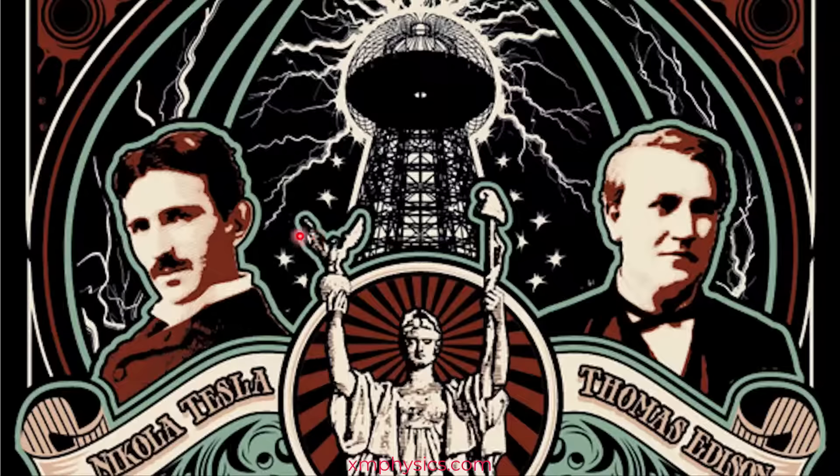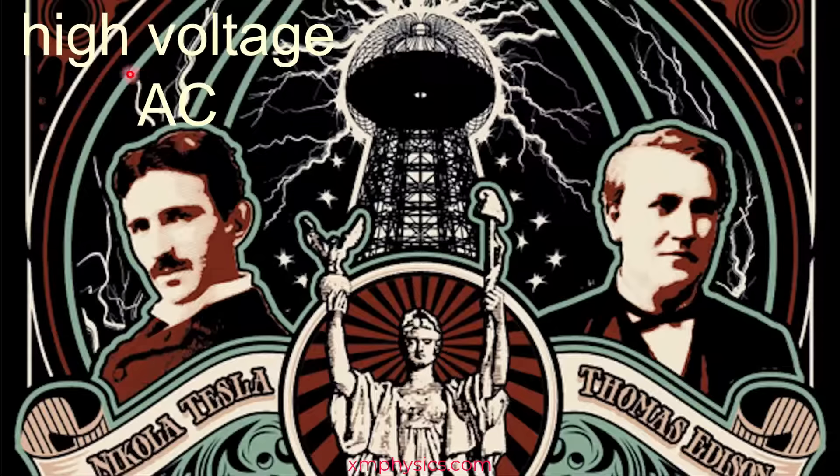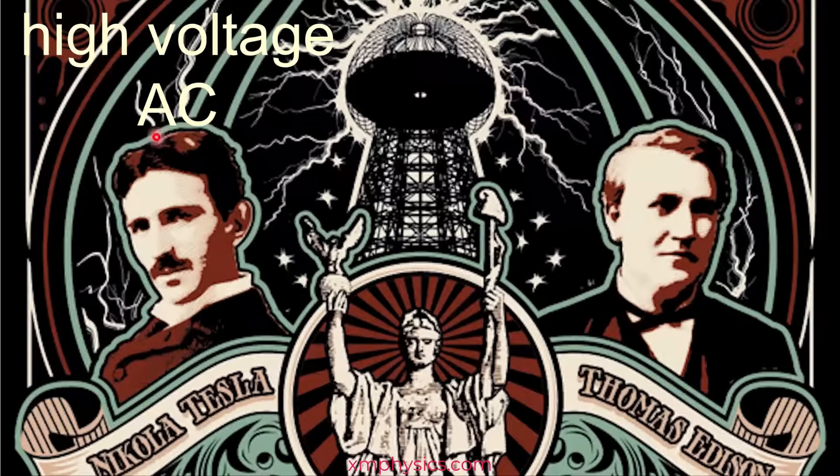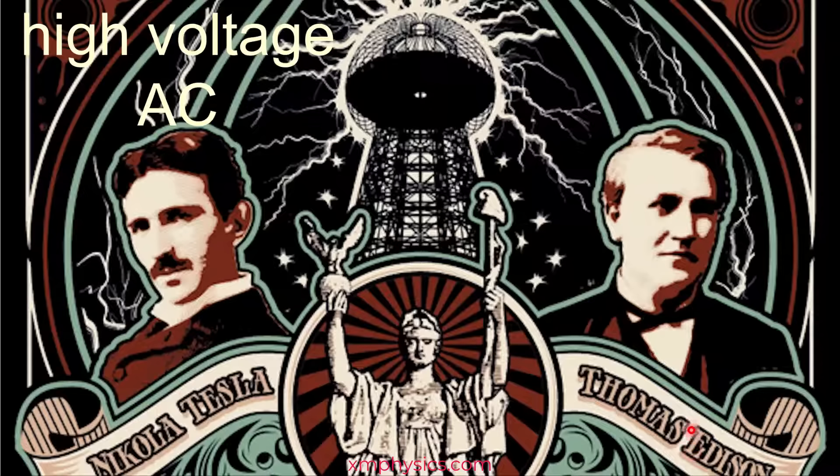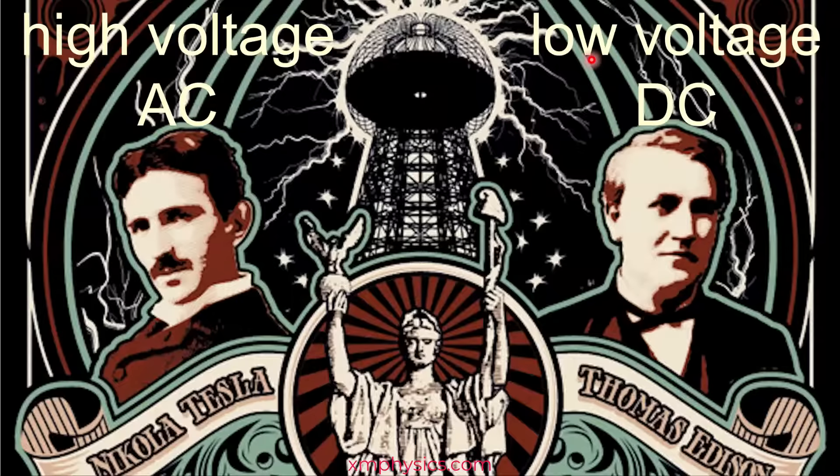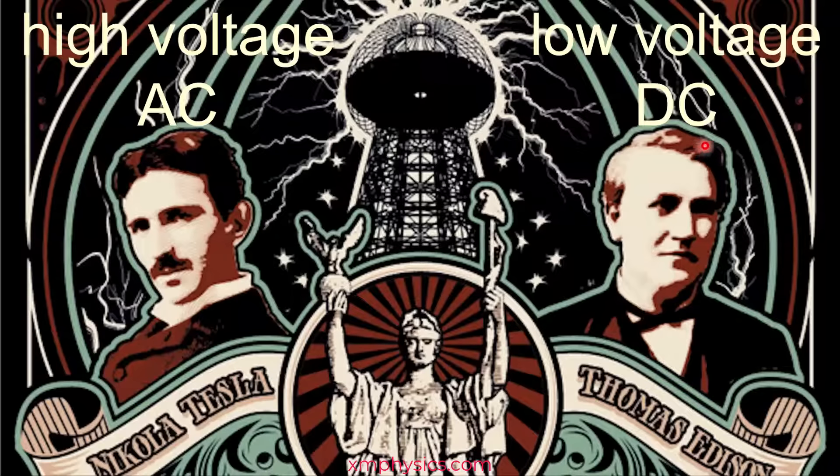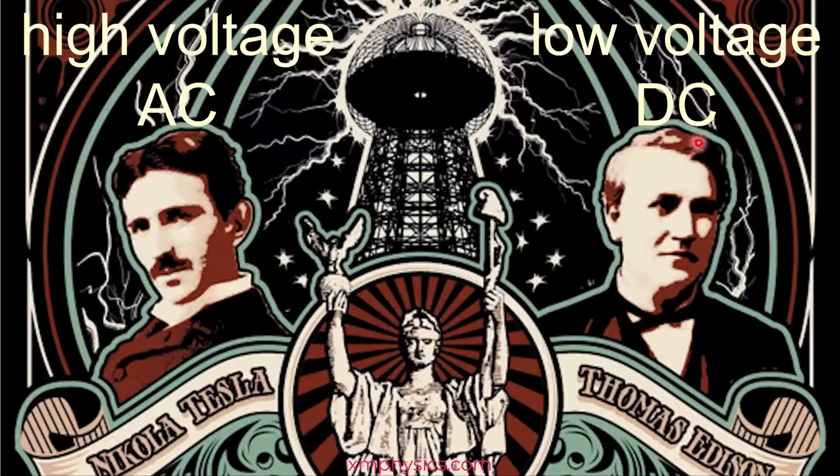One of them is headed by Nikola Tesla, whose company is championing their high voltage AC power system. The other company is headed by Thomas Edison, yep the guy who invented the light bulbs, and his company is betting on a low voltage DC power system.